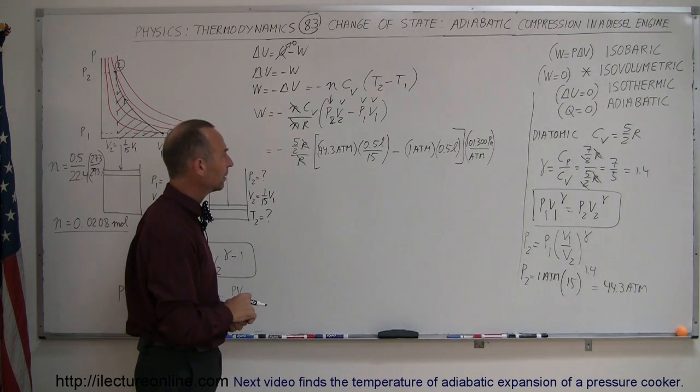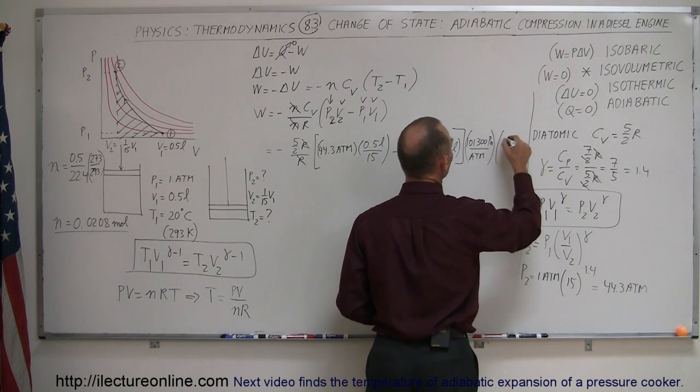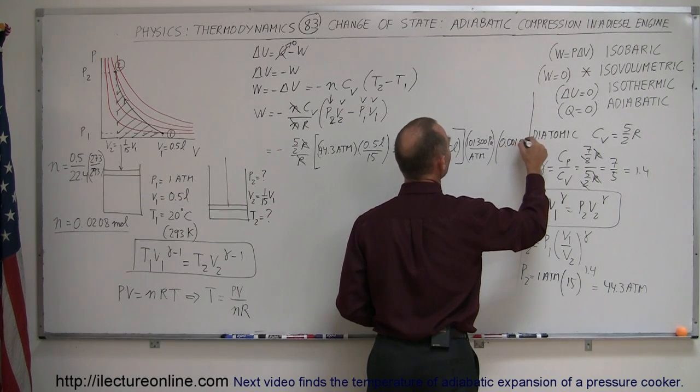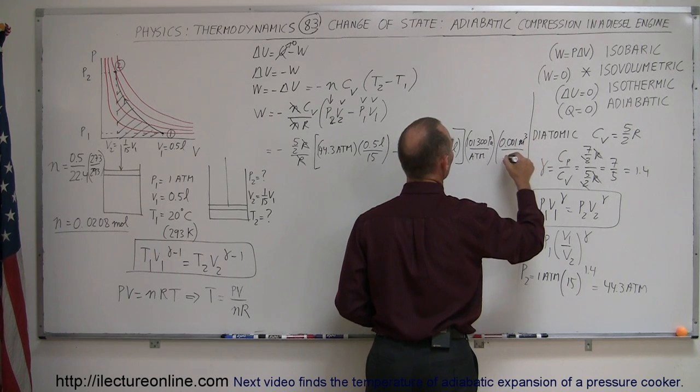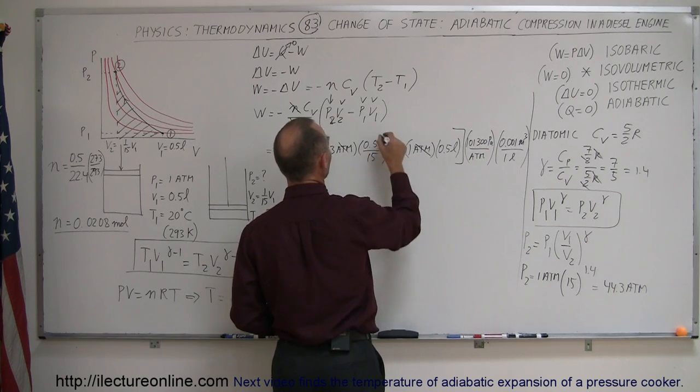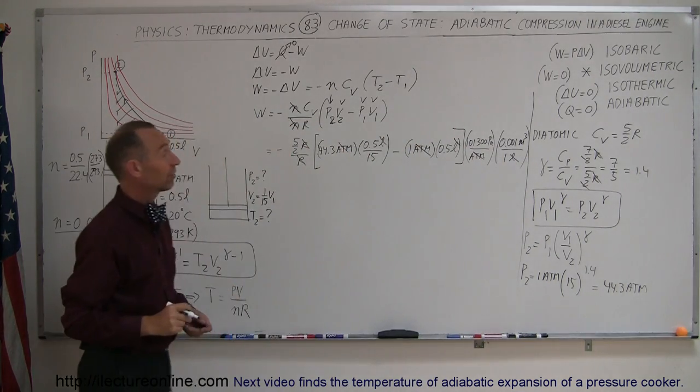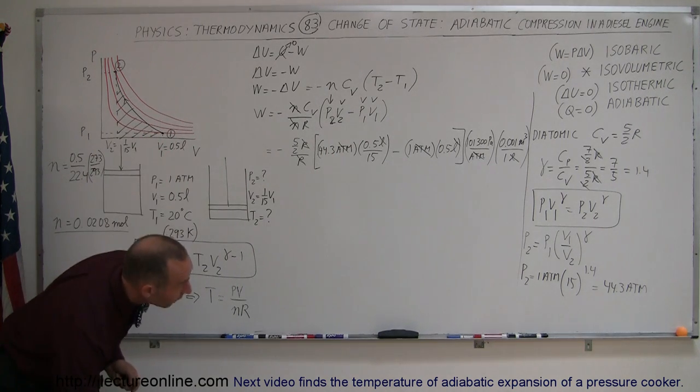Pascals, of course, are Newtons per square meter. Then we convert from liters to cubic meters. So we have 0.001 meters cubed divided by 1 liter. Notice that the atmospheres cancel out, and the liters cancel out, leaving Pascals and cubic meters. Now we're ready to calculate the result.